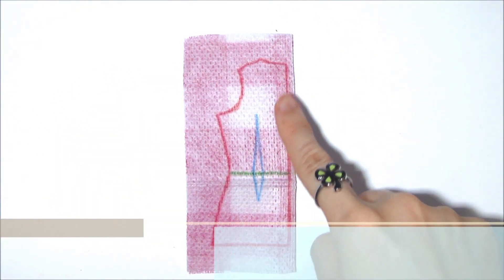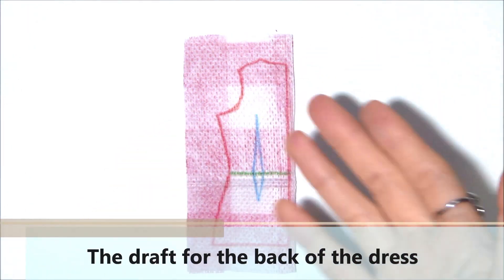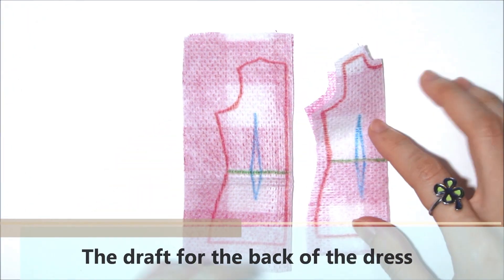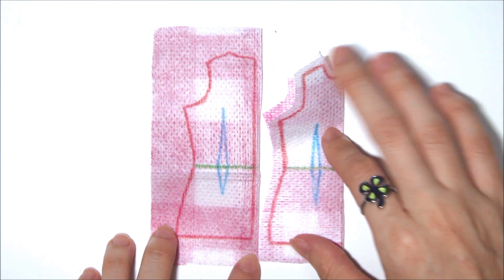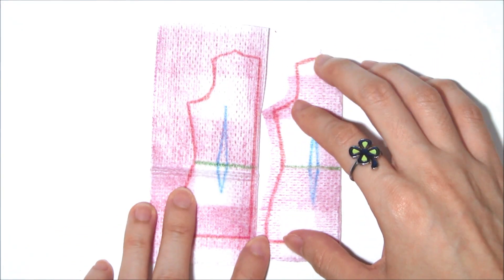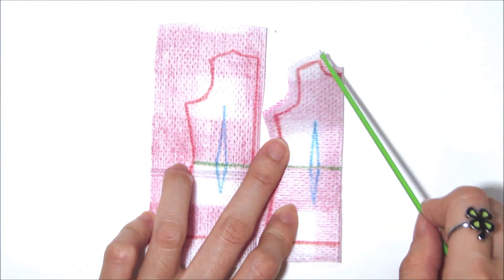So this is the draughting for the back of the dress. And as you can tell, it's slightly different from the front. Firstly, the collar at the back is higher because, well, our neck is on at the back.